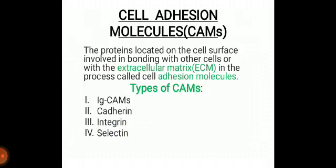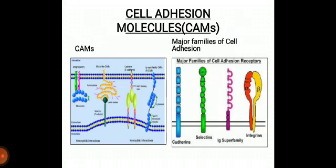Cell adhesion molecules (CAMs) are proteins located on the cell surface involved in bonding with other cells or with the extracellular matrix (ECM) in the process called cell adhesion. CAMs help cells stick to each other and to their surroundings, and the molecules responsible for this adhesion are called CAMs. Cell adhesion molecules have an extracellular domain, with which a CAM attaches or binds with other CAMs. There are two types of binding: homophilic binding, where one type of CAM binds with the same type, and heterophilic binding, where a CAM of one cell binds with a different CAM of another cell. The major families of cell adhesion molecules are: Ig-CAM, cadherin, integrin, and selectin.